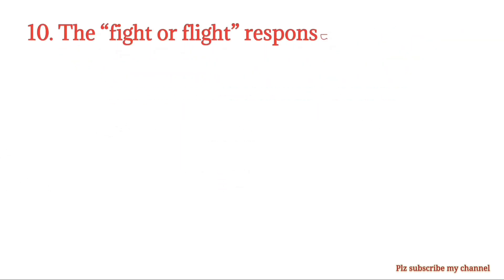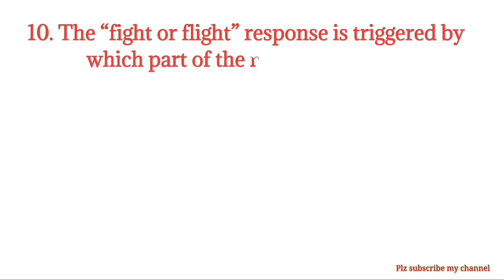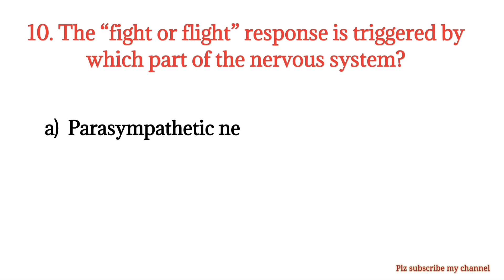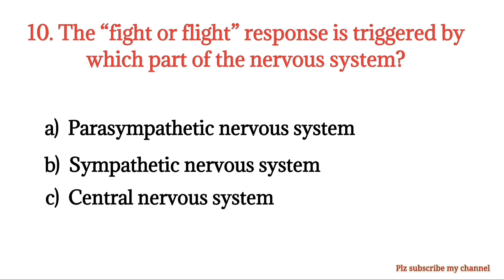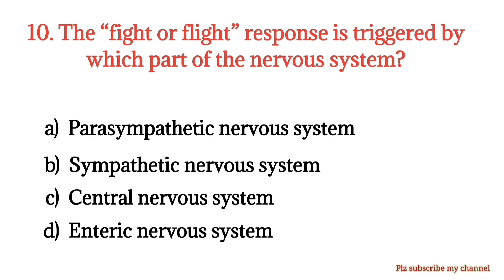MCQ number 10. The fight-or-flight response is triggered by which part of the nervous system? Option A: Parasympathetic nervous system. Option B: Sympathetic nervous system. Option C: Central nervous system. Option D: Enteric nervous system. The right option is Option B.